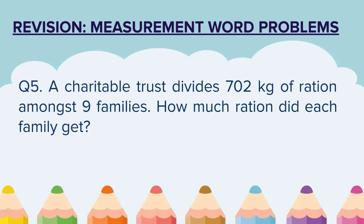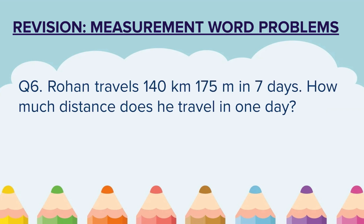Question 6. Rohan travels 140 kilometers 175 meters in 7 days. How much distance does he travel in 1 day? The total distance Rohan is traveling in 7 days is given. We have to find out how much he is traveling in 1 day.